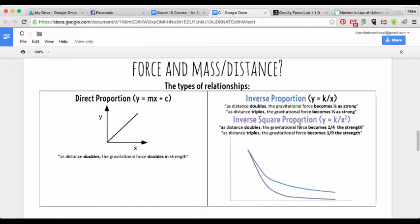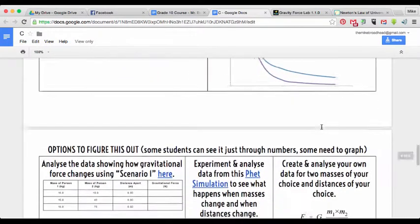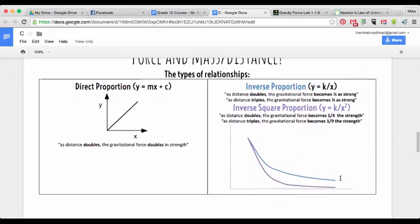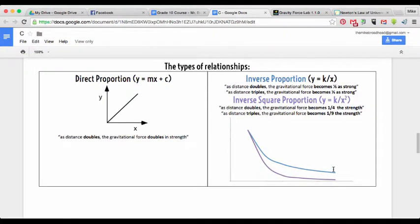So what we can see here is that distance doubles, gives us gravitational force that's a quarter of the strength. Therefore, it's an inverse square proportion. And this really matches our equation. Force is equal to these terms divided by distance squared. So we can actually see it from the formula that it's going to be an inverse square relationship, because we're dividing by distance squared. But that's how we would think about it mathematically.